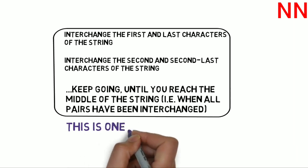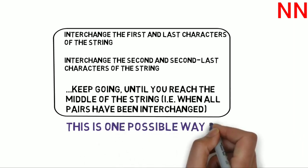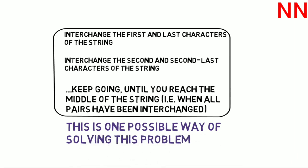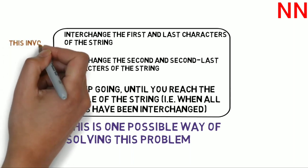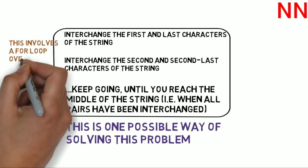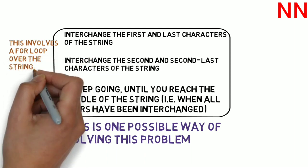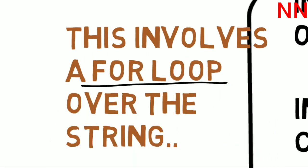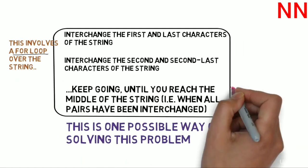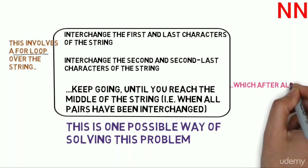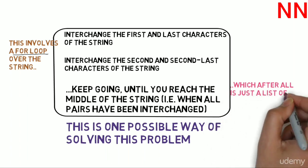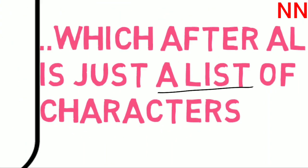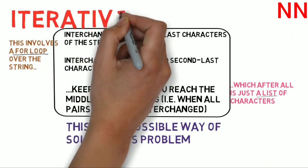This is one possible way of solving this problem. We'd probably use a for loop to iterate over the string, and for every iteration of the loop we'd perform one exchange. A string, if you really think about it, is simply a list of characters. So what we are doing is iterating over the list of characters and going about performing these swaps. This is an iterative solution to this problem.